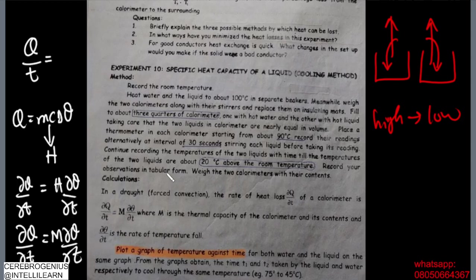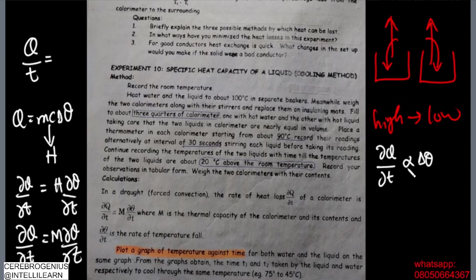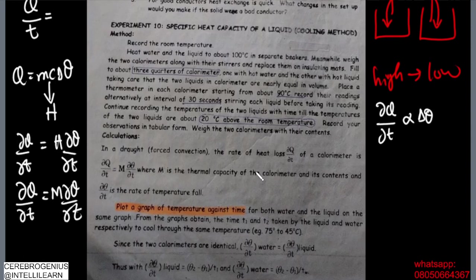Newton's Law of Cooling states that the rate of heat loss of a body is proportional to the temperature difference between the body and its environment: dQ/dt ∝ (θ_body − θ_surroundings). From the beginning, both calorimeters are made identical — same starting temperature, same volume, same ending temperature — so their rates of heat loss are equal.